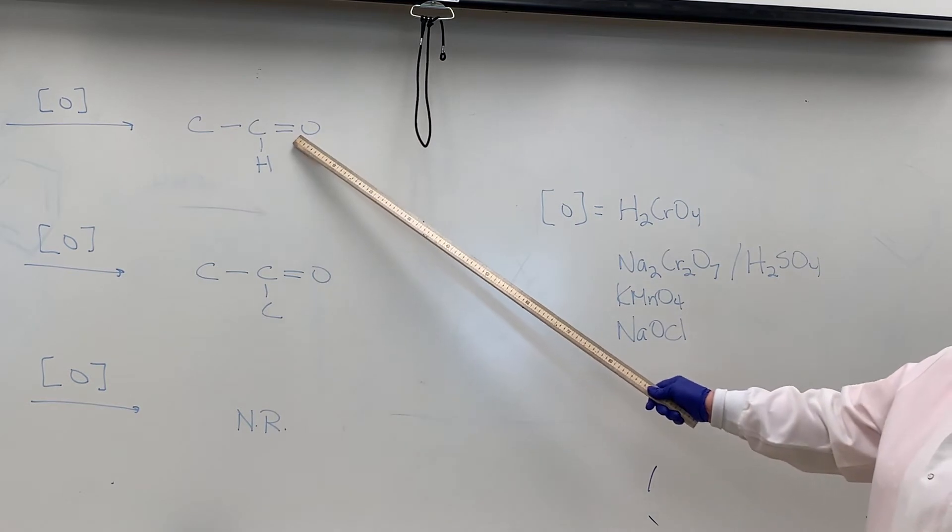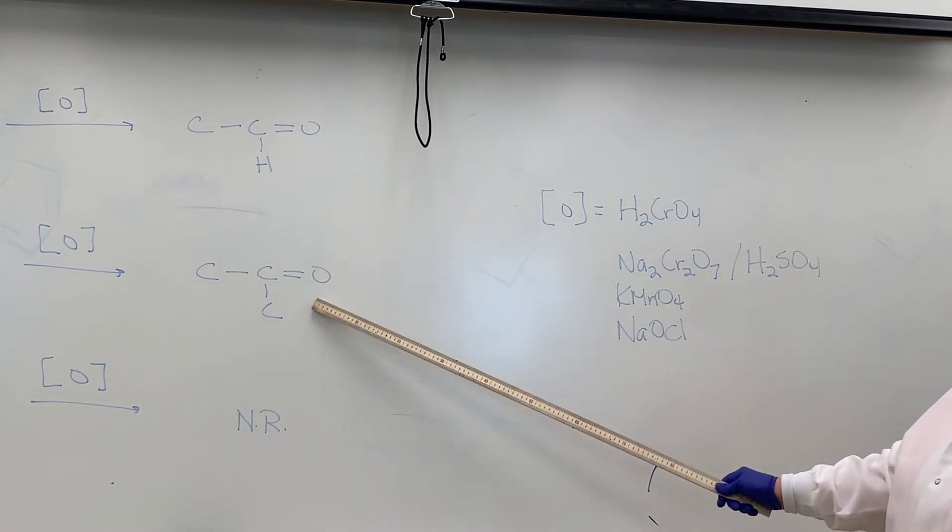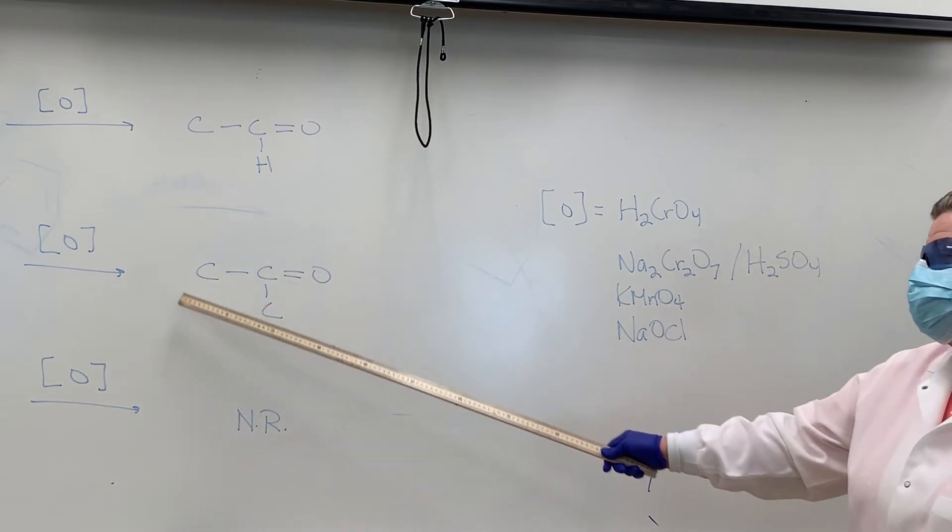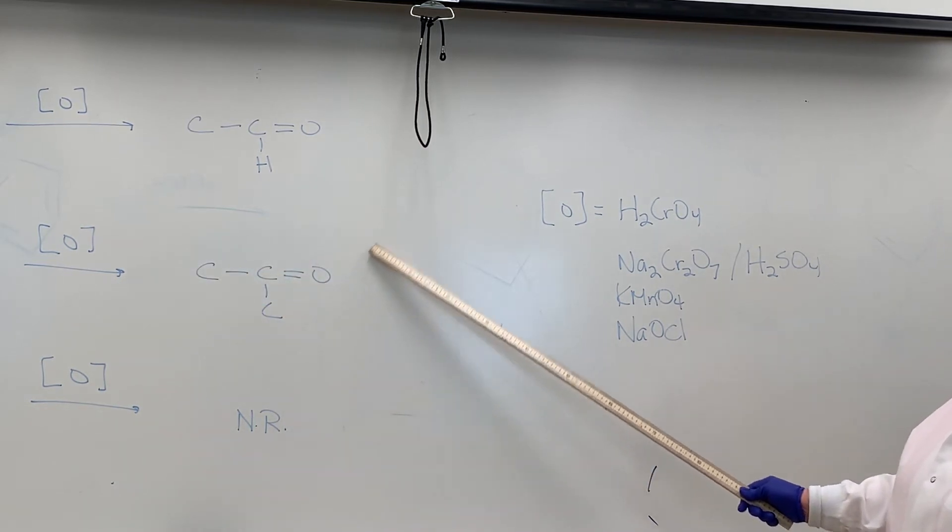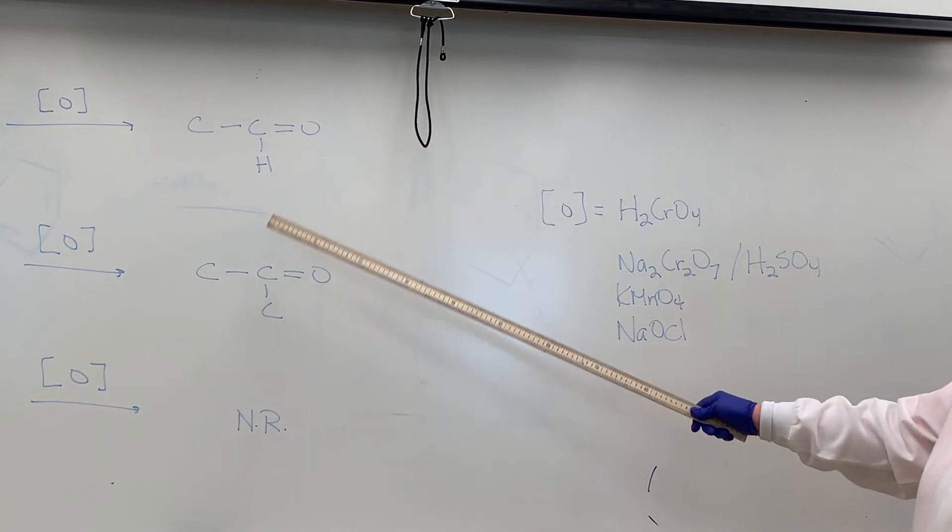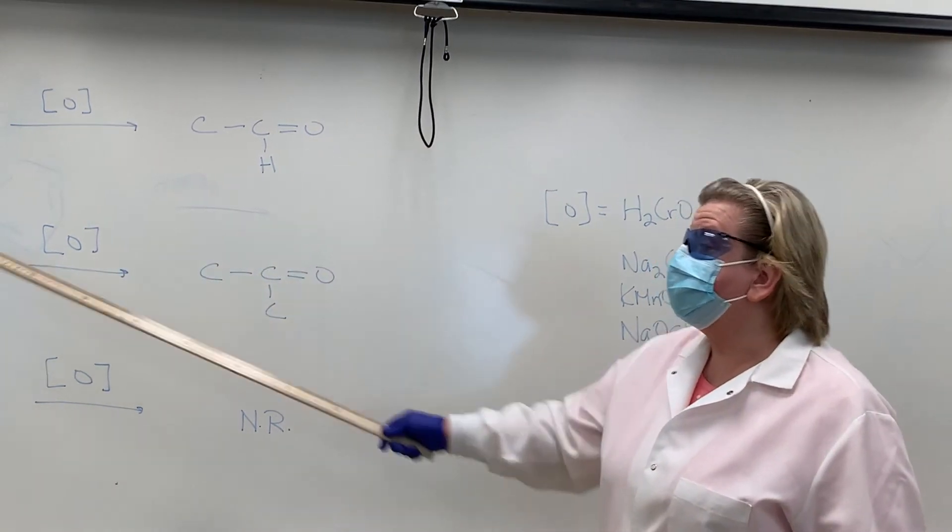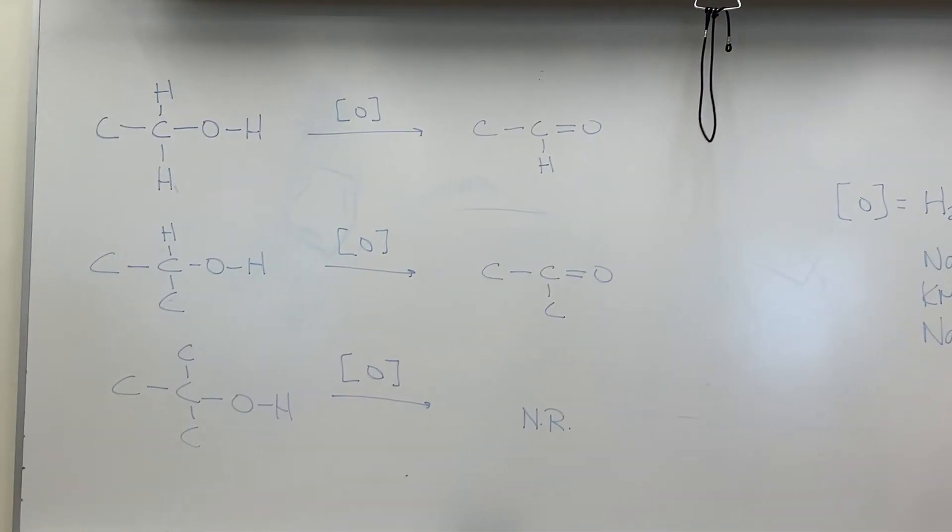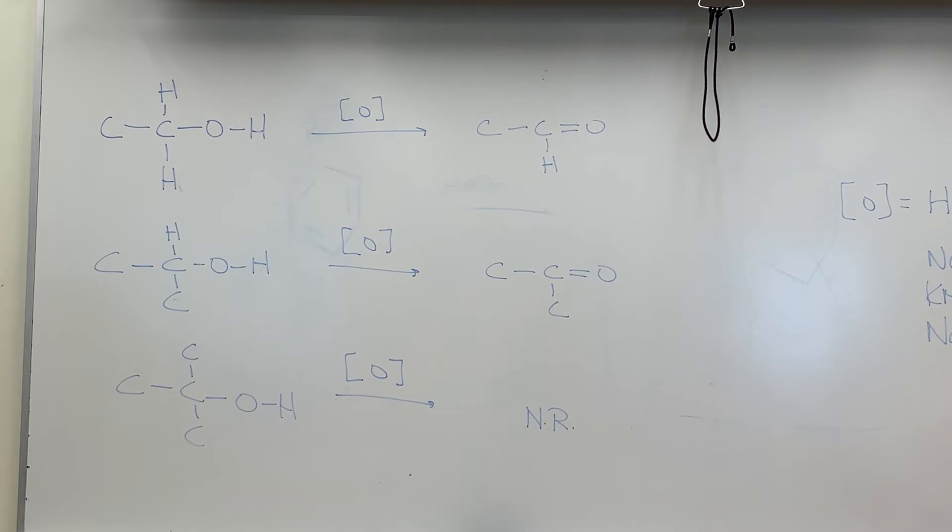As I said earlier, aldehydes are easily oxidized further, but ketones are not. So the chromic acid test should end up negative because that should only be positive for the aldehyde test. If it is negative, that tells us that we've used up all of our alcohol as well, so we can look at it in terms of how successful the reaction was and did we form the carbonyl group.